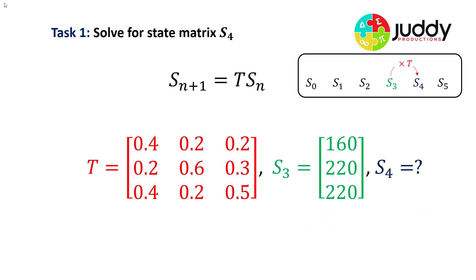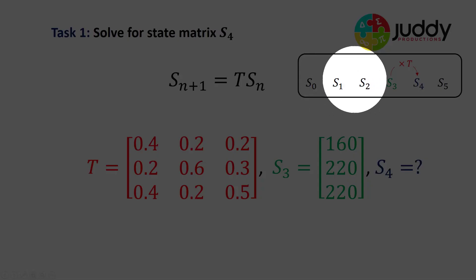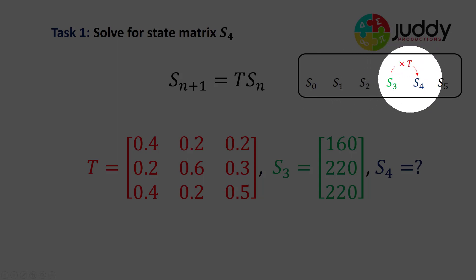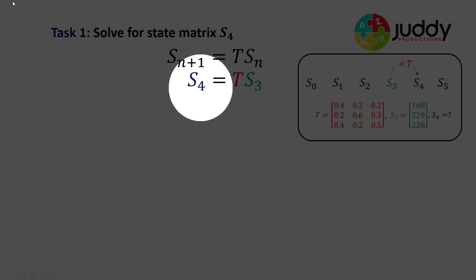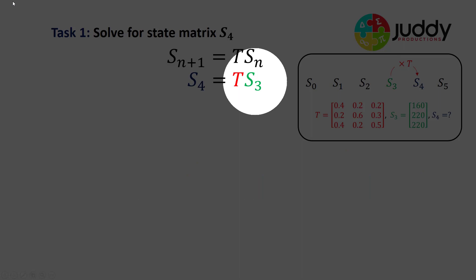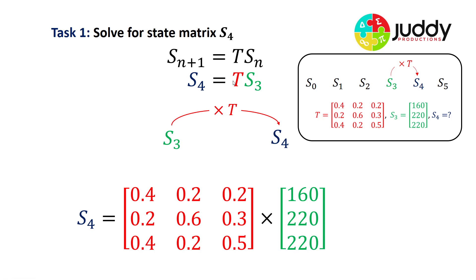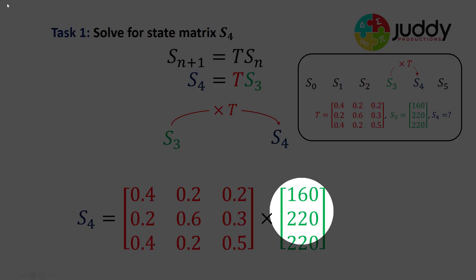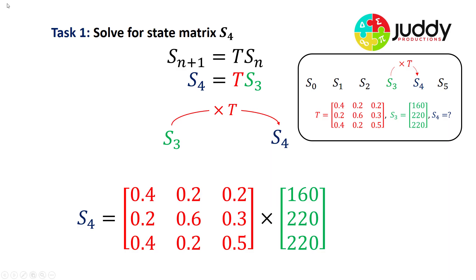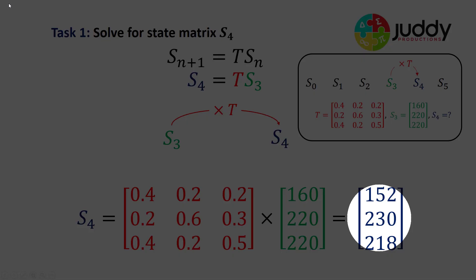Visually, we have our initial state, our first, second, third, and we're transitioning to our fourth. To find the fourth state matrix we simply multiply the third state by the transition matrix. So S4 equals the transition matrix multiplied by the S3 matrix. When we multiply those two matrices together, we find the state four matrix is 152, 230, and 218.